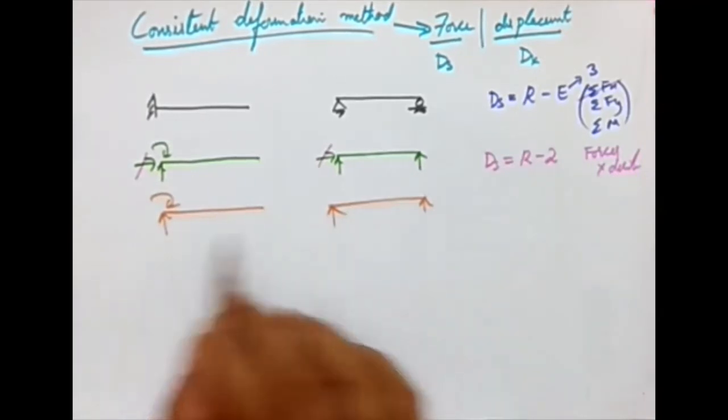In the consistent deformation method, we equate the deformation of a primary structure and its substructures, writing what is called a compatibility equation. For this propped cantilever, we have three unknowns. Neglecting the horizontal reaction gives DS equal to one, meaning there is one degree of static indeterminacy. We cannot directly use sigma Fy and sigma M alone to solve it.